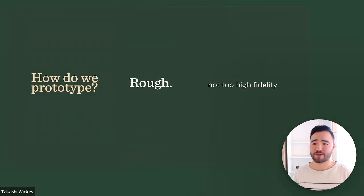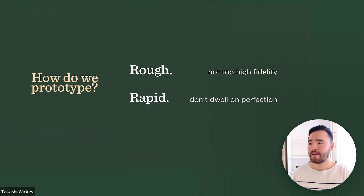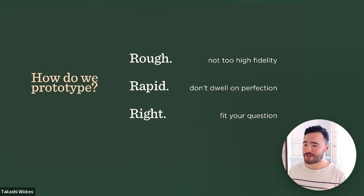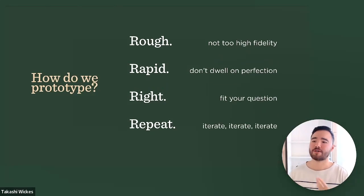But just four quick rules of how do we prototype. And these are the four R's of prototyping. You want to start rough, so start early. Don't focus on getting too high fidelity. Go for rapid. Don't dwell on perfection. Make things that are fast and quick that you're able to get to kind of a solution really quickly. Make sure it's right, fits your question. Right's not the best word here, but right, it's almost like a right question mark. You want to make sure it's fitting your question and then repeat. Make sure it's something that's iterative, that you can change and continue to evolve throughout time.